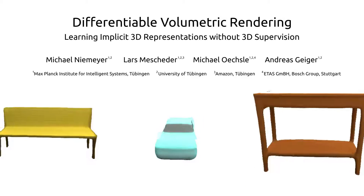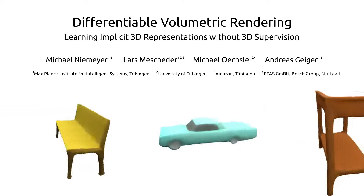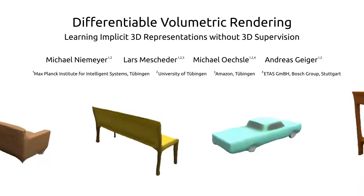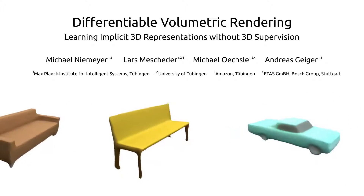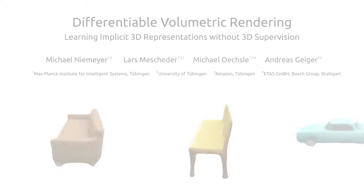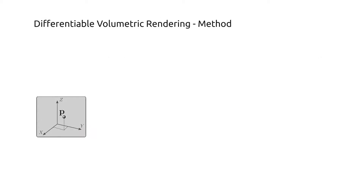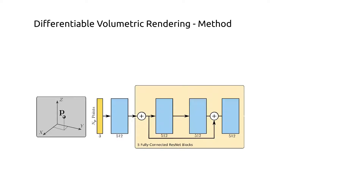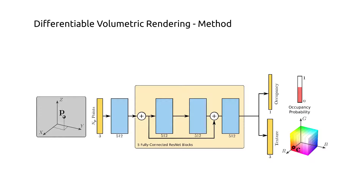In DVR, we represent the shape and texture of an object with an implicit neural representation. More specifically, we can take any point in 3D space and pass this through our fully connected neural network to predict an occupancy probability as well as an RGB color value.